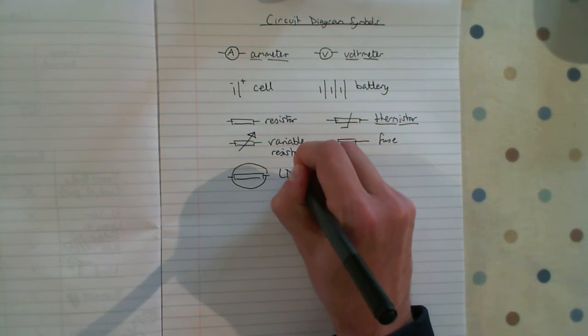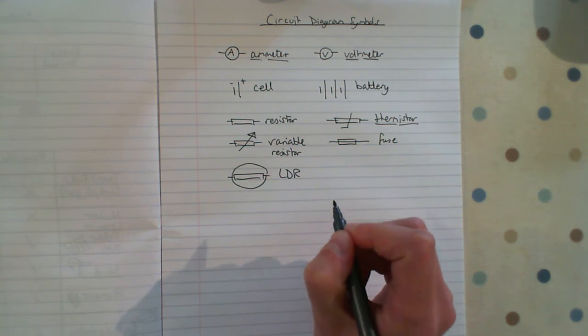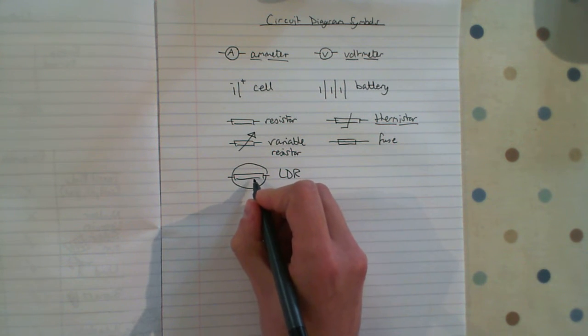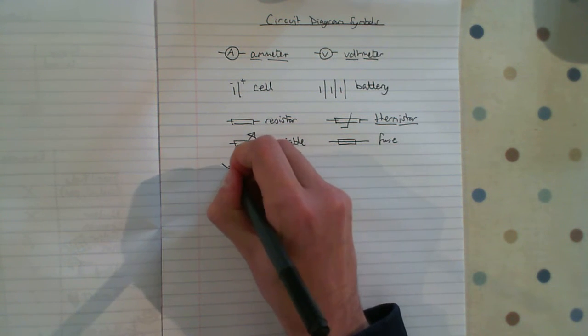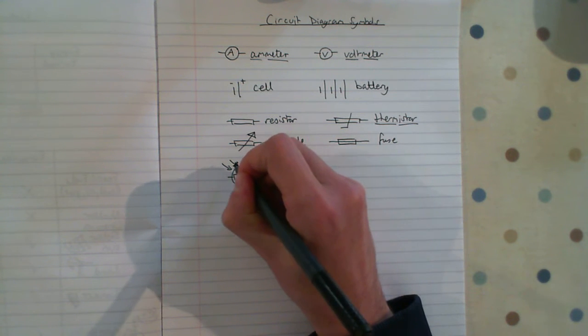The LDR stands for light dependent resistor, so it's a resistor that depends on light. It's got a rectangle showing it's a resistor, and it's also got two small arrows pointing into it. Those two small arrows represent light.